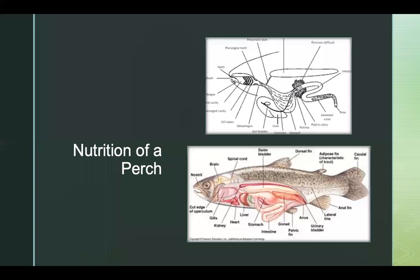The perch digestive system works very similarly to humans. Food starts through the mouth, is ripped apart by the teeth, then passes through gill rakers. It follows down to the pharynx, then down the esophagus into the gizzard where food is further broken down, and then travels to the stomach where, much like the human digestive system, food is broken down and has its nutrients extracted.